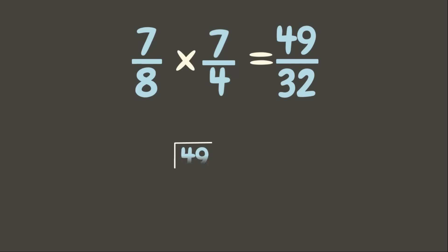49 divided by 32 is 1. 1 times 32 is 32. 49 minus 32 is 17. Now our answer is 1 and 17 out of 32.